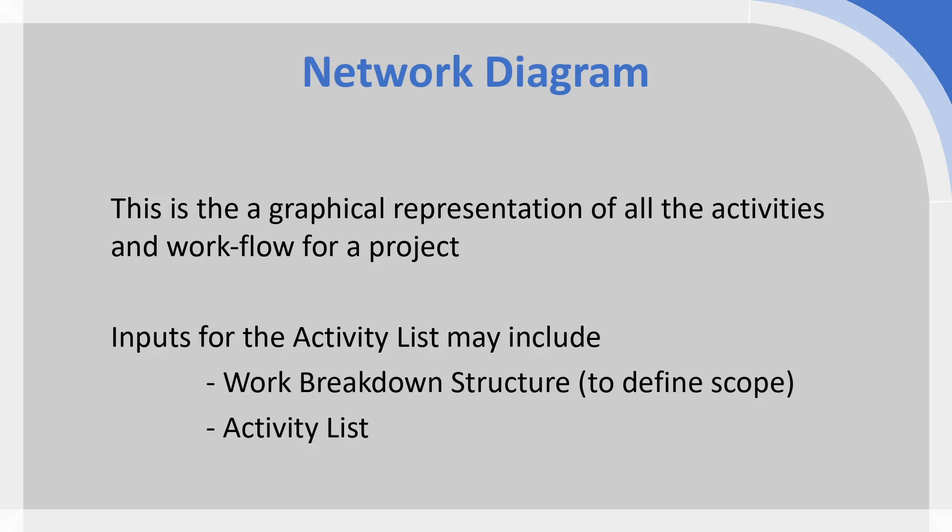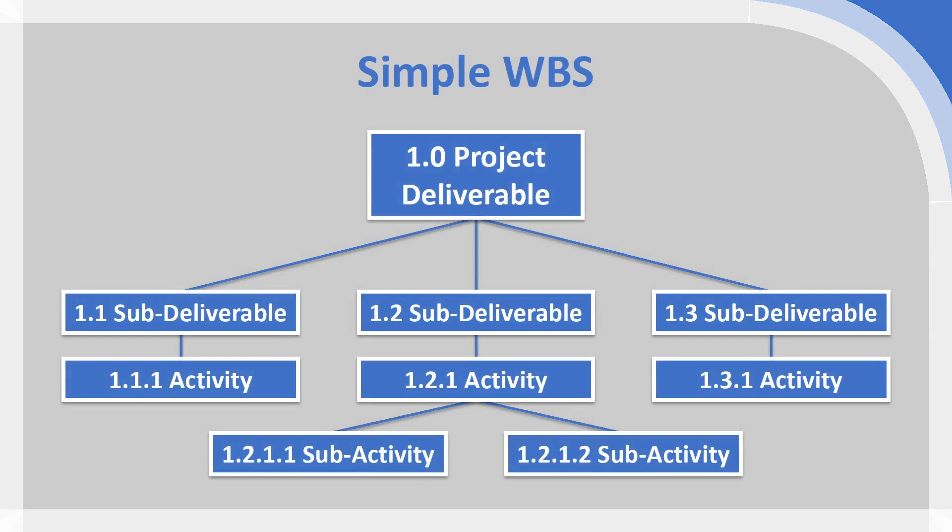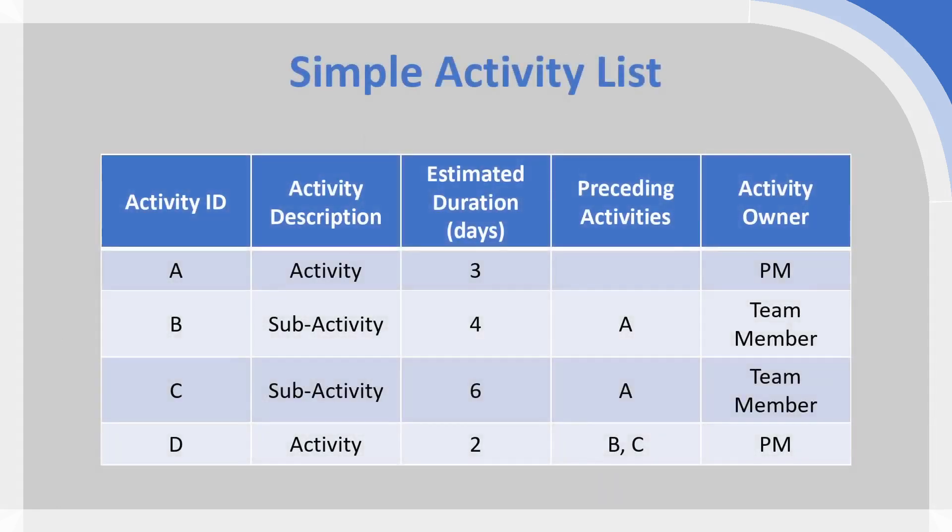So if we start by creating a basic network diagram, we're going to start with the work breakdown structure so we can understand which activities have to be included. As a refresher, we're going to take the activities or items at the lowest level of every branch on the WBS and put these into an activity list. So we have this activity list with four identified activities, and for the needs of the network diagram, we need to pay particular attention to the preceding activities to allow us to sequence the network diagram properly.